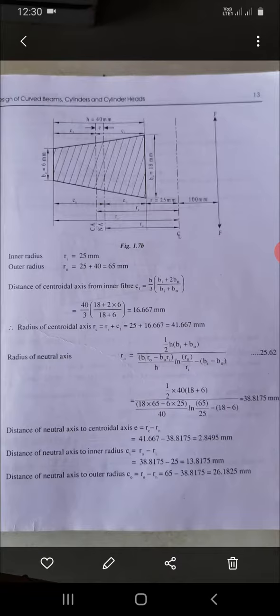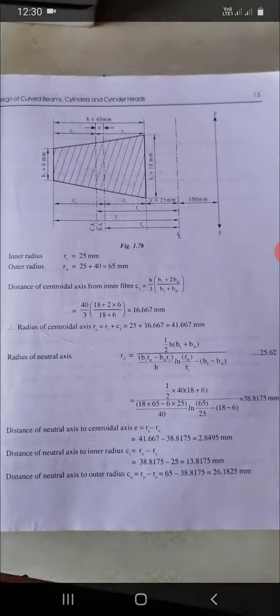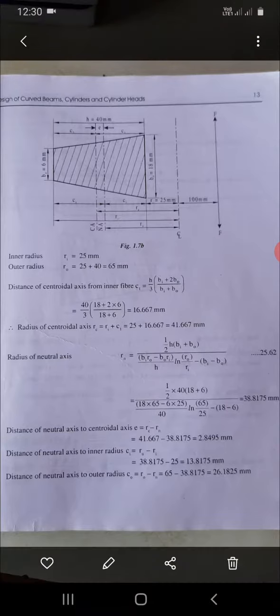C1 = H/3 × (BI + 2BO)/(BI + BO). This formula is from the reference book. C1 = 16.67. So RC = RI + C1, we get RC = 25 + 16.67 = 41.67mm.